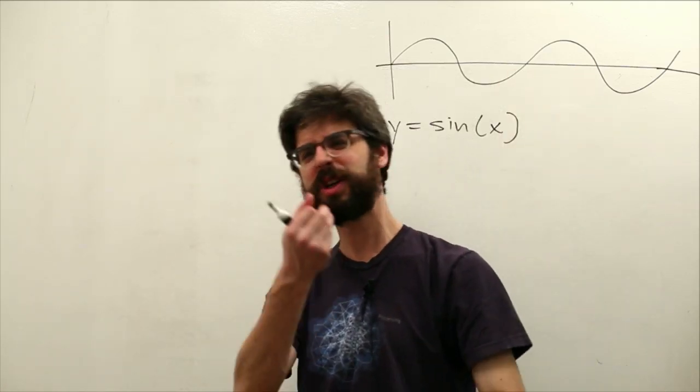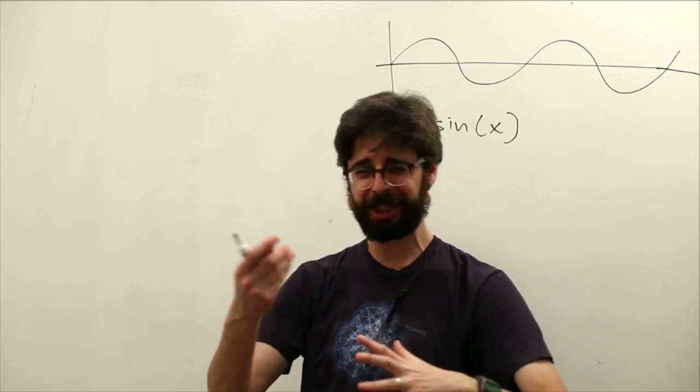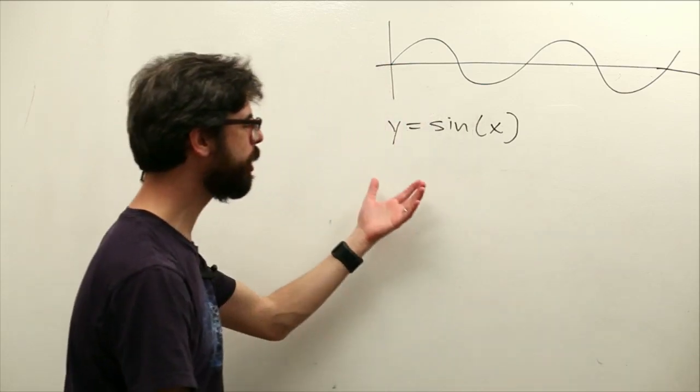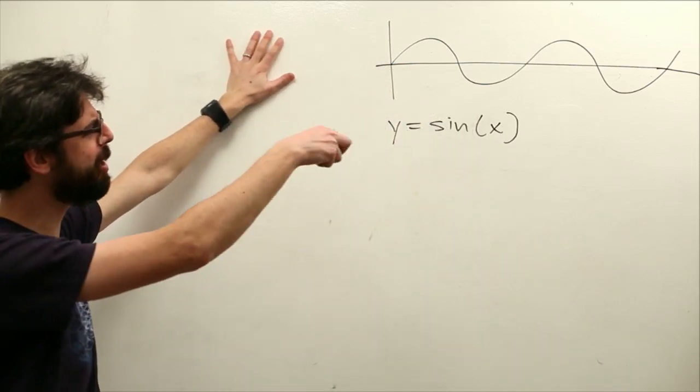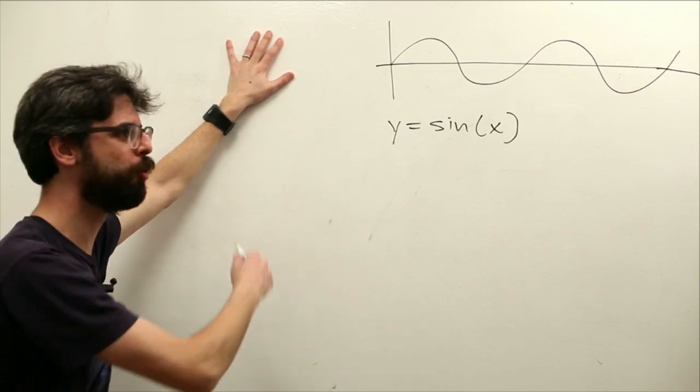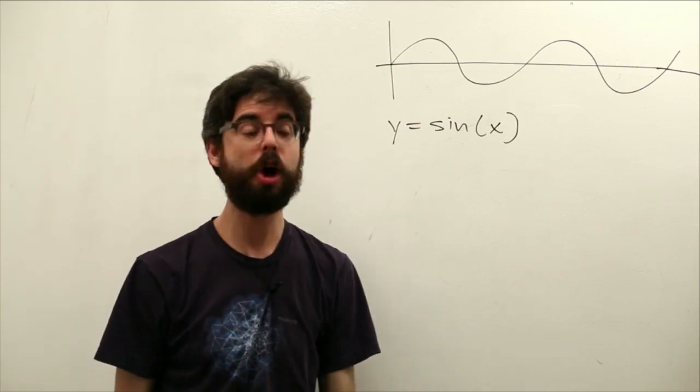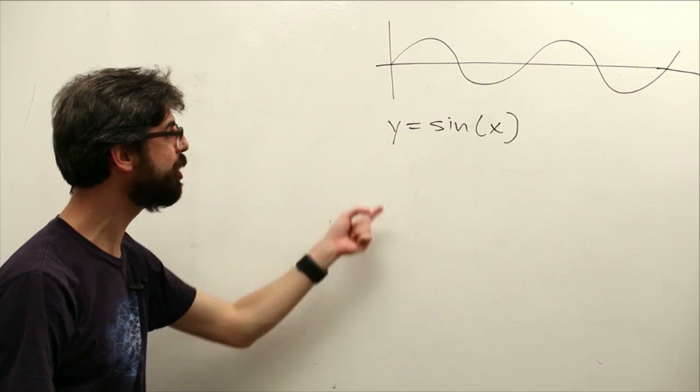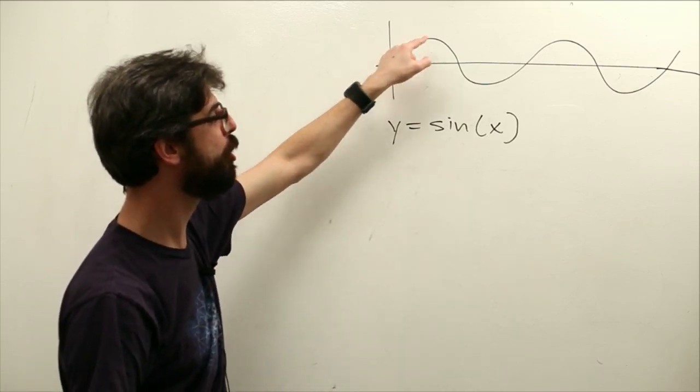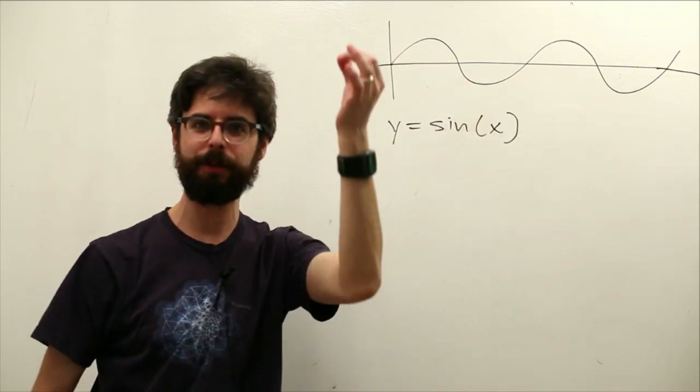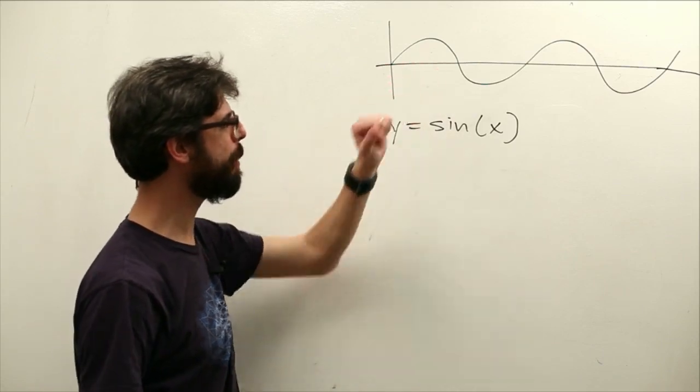We used sine to do a polar to Cartesian transformation thing in the previous video. Now we're just saying, hey, if sine gives us this nice wave pattern, couldn't we draw that wave pattern on the screen? Or couldn't we map an object's location, its y location to the results of the sine function, and have something move up and down?